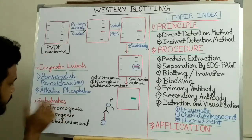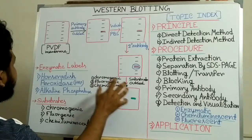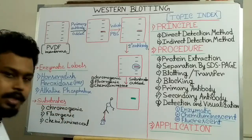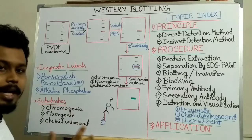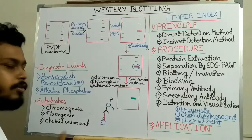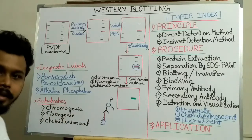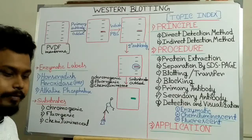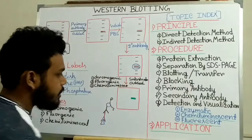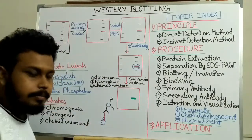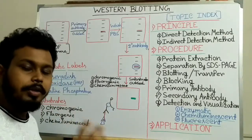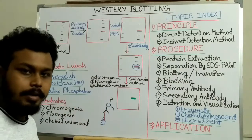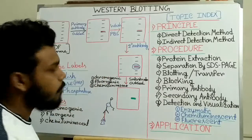Depending on the enzyme molecule used, we give different types of substrate to the nitrocellulose or PVDF membrane. The substrate may be chromogenic, fluorogenic, or chemiluminescent. A chromogenic substrate gives a color that can be visualized directly on the membrane. A fluorogenic substrate gives fluorescence detected by spectrophotometry. A chemiluminescent substrate gives chemiluminescence — when a photographic plate is placed on the membrane, it produces a spot on the plate, allowing us to detect that the protein is present.